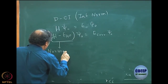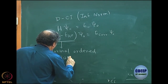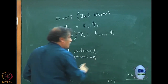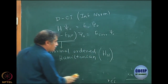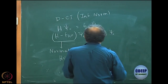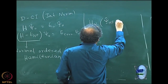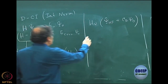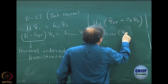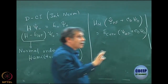This operator is called the normal-order Hamiltonian, and it will be made much clearer when you study second quantization later. It is denoted H_N. The entire CI equation can now be written in terms of this operator: H_N acting on psi_HF plus C_d psi_d, with C0 = 1, equals E_correlation times psi_HF plus C_d psi_d. The Hamiltonian is now H minus E_Hartree-Fock — that is all.